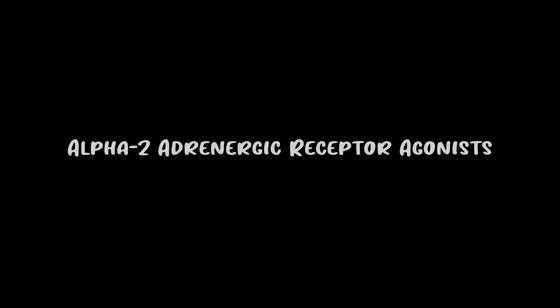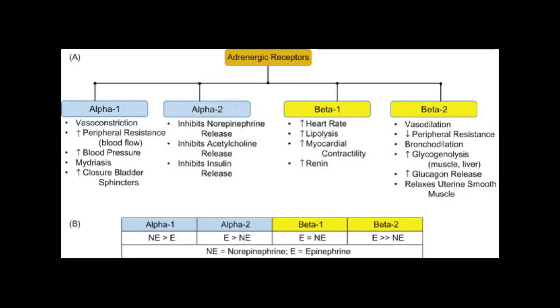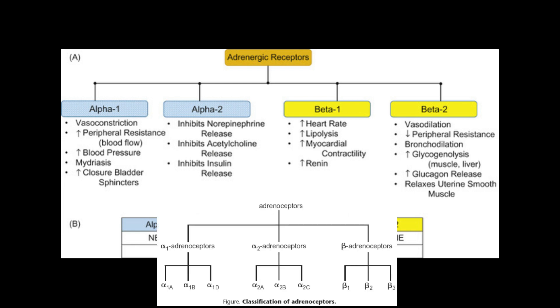I think clonidine and guanfacine's mechanism of action is confusing, so let me go over it. What we know is that they're alpha-2 agonists. The whole point I'm showing this picture is to show why it's so confusing to remember what it does. To make matters even worse, there are subtypes of the different receptors, which makes it really confusing and impossible to remember.